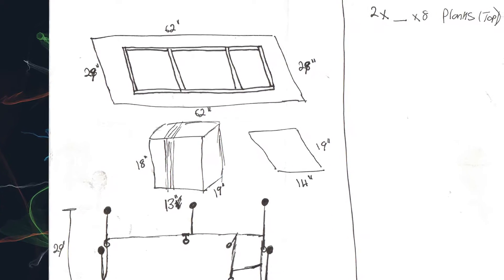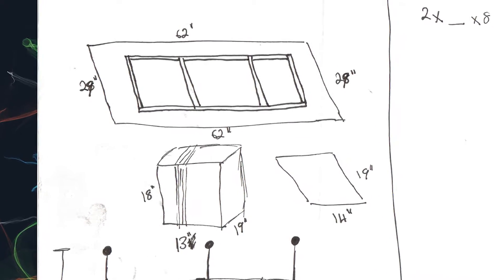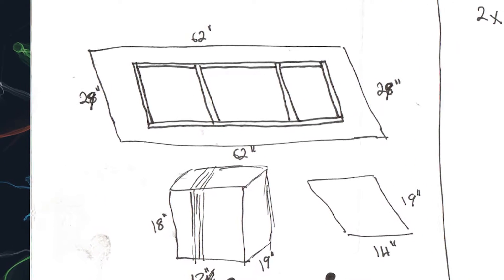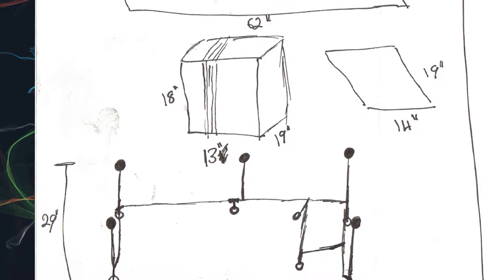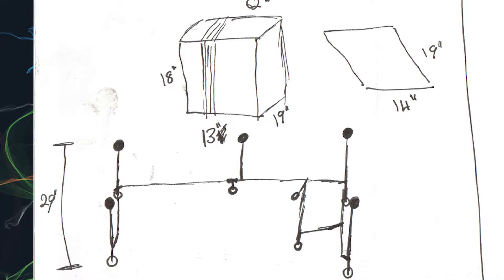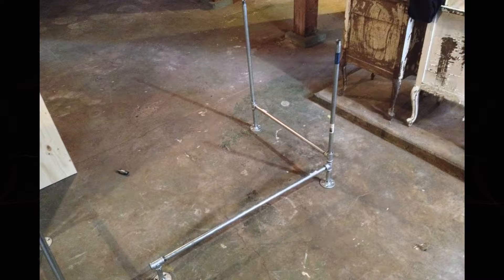I took measurements for height, depth, and width, planned the surface dimensions based on the PC case size I was going to use, and made a brief layout showing the metal pipes I was going to need to buy. I got all my materials — pipes, fittings, and feet — as well as four nice oak boards. First, I assembled this section of the desk support according to the very detailed design sketch.